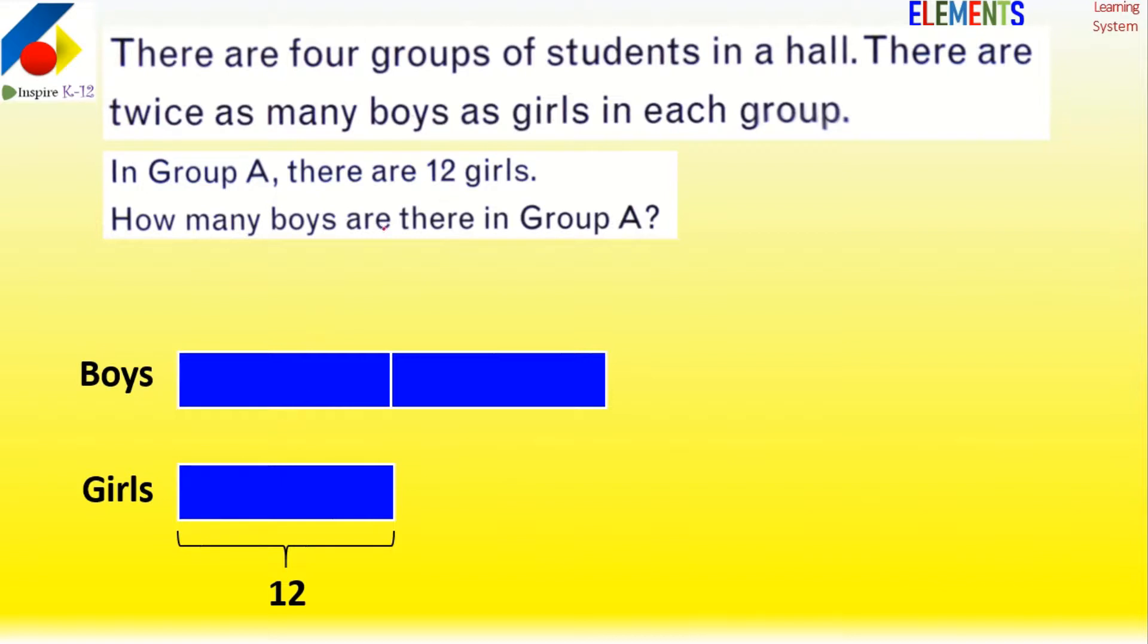Boys are double the girls, and girls are 12. So we can represent it like this. From 12, that's all.